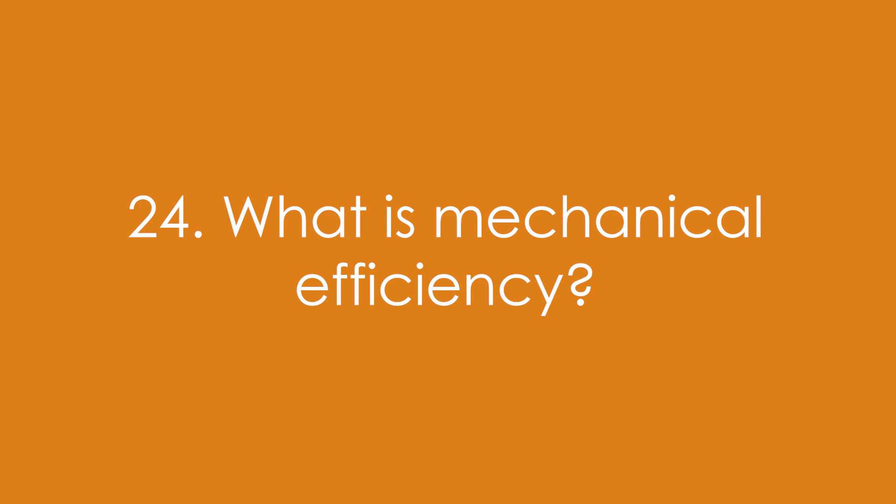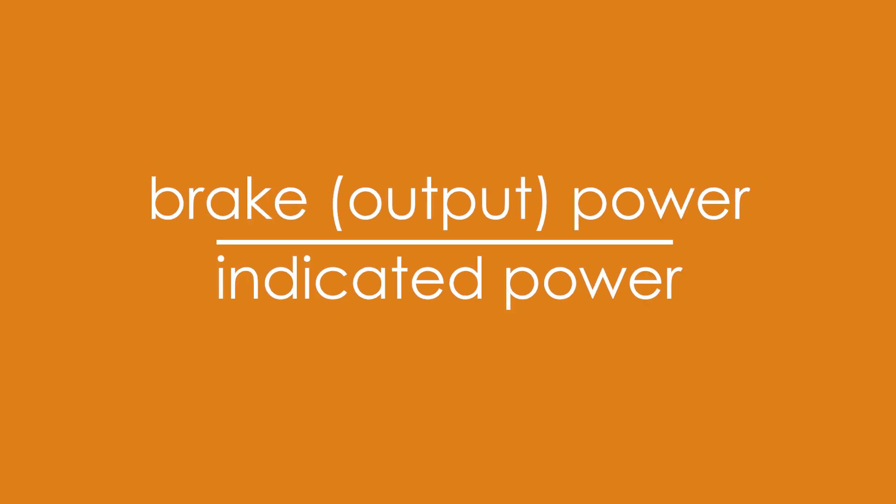Question 24: What about mechanical efficiency? That's brake power divided by indicated power — power is lost due to friction and other forces.